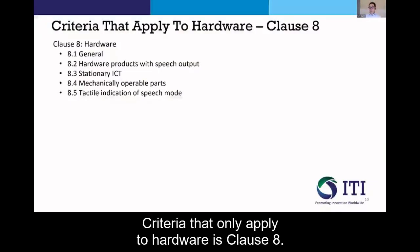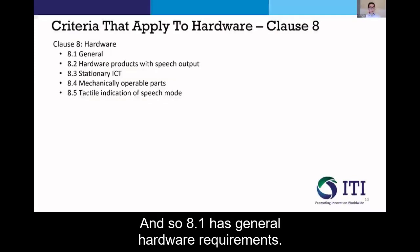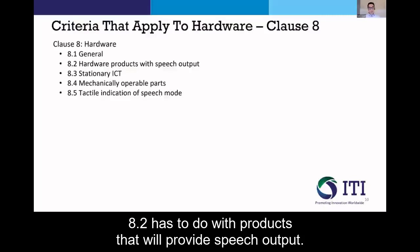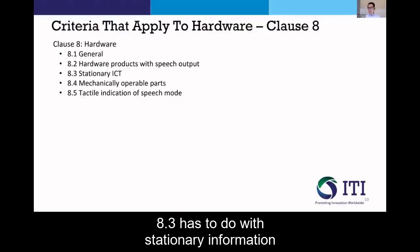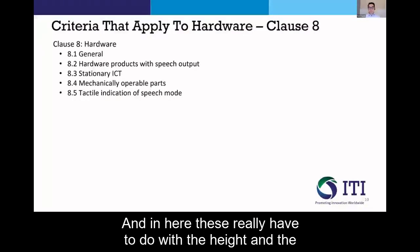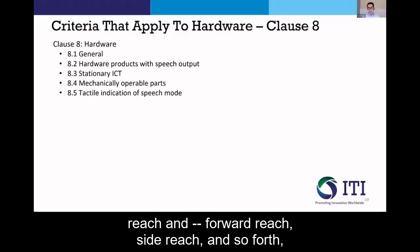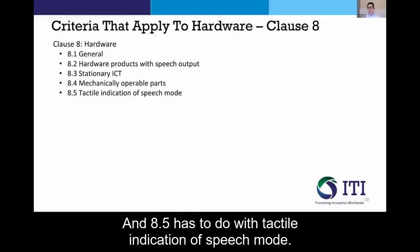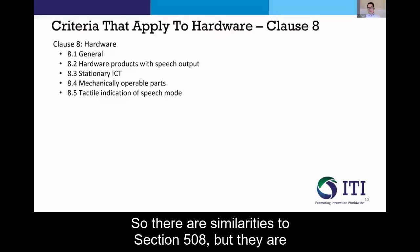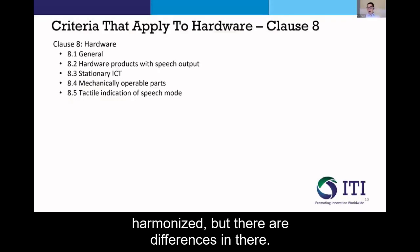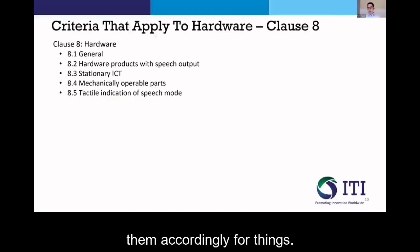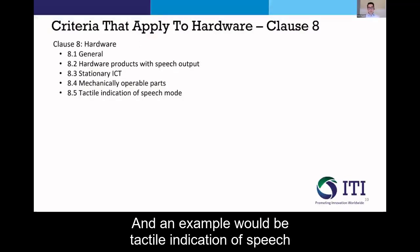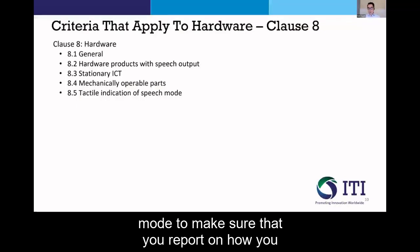Criteria that only apply to hardware fall under clause 8. Clause 8.1 has general hardware requirements. 8.2 covers products that provide speech output. 8.3 covers stationary information and communication technology — ICT — including height, reach, forward reach, side reach, and change in level. 8.4 is about mechanically operable parts, and 8.5 covers tactile indication of speech mode. There are similarities to Section 508, but they are harmonized with differences, so be aware of those and report accordingly.